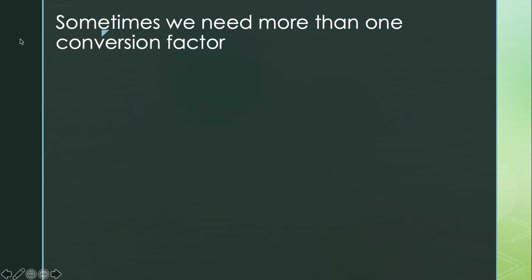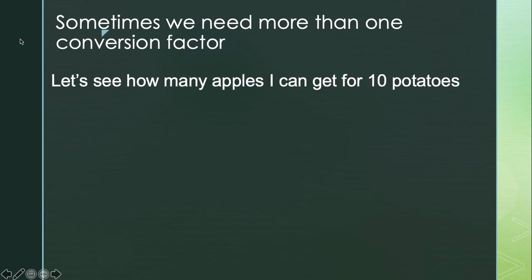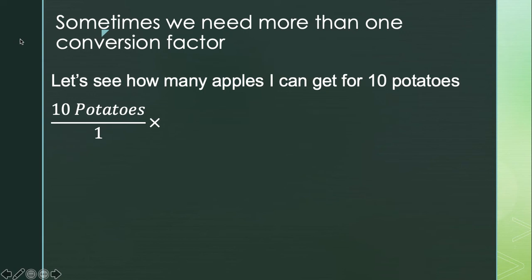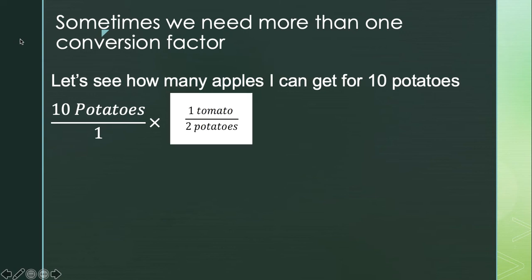Sometimes we're going to need more than one conversion factor. Here's an example: I want to see how many apples I can get for 10 potatoes. We always start with what we know — 10 potatoes over 1 as a fraction. I want to find a card that has potatoes and apples, but there's no conversion factor that goes directly from potatoes to apples. So I'll find any card that has potatoes. I found a card that has tomatoes and potatoes, and because I want potatoes to cancel, I make sure to pick the conversion factor that has potatoes in the denominator.